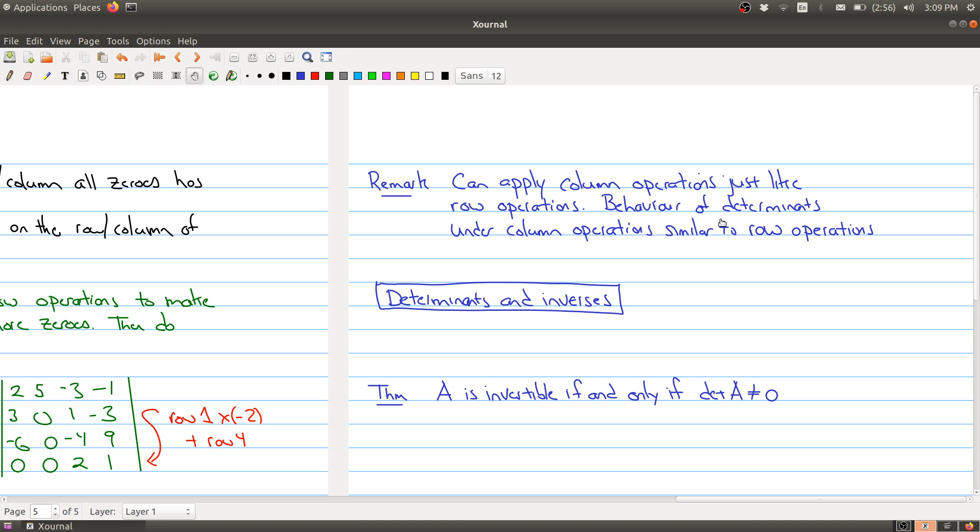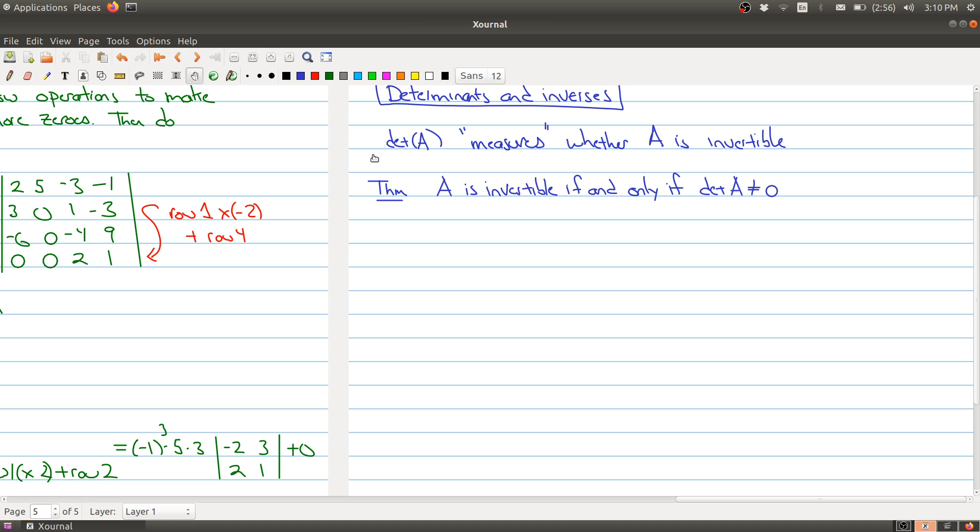Okay. So kind of going back to one of the topics at the beginning, one of the points of having the determinant is to measure invertibility. All right. So let me just kind of put that down here. The determinant of A in some way measures whether A is invertible. Okay. And in fact, the theorem here, the statement of the theorem says it precisely. So a matrix is invertible if and only if the determinant is not zero. Okay. And we have to use all of our row operation tools in order to prove this. And since this is an important result, I do want to spend a little bit of time on the proof.